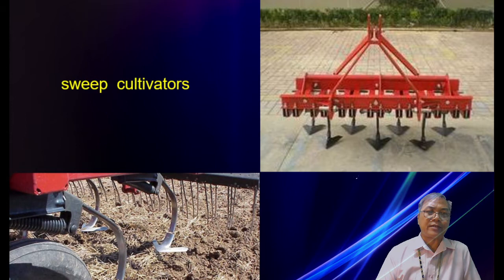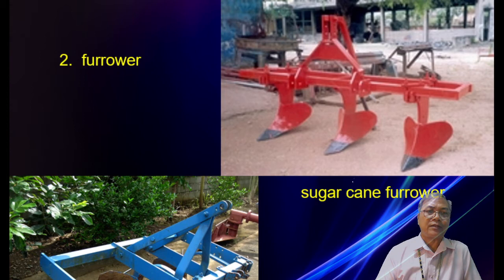These are sweep cultivators. We also have furrowers — on the right is the sugarcane furrower, and on the left is the corn furrower. They look similar but differ in the distance or row spacing recommendations. Number three is the weed knife. Number four is the shovel, which comes in single point, double point, hoof shovel, and spearhead types.